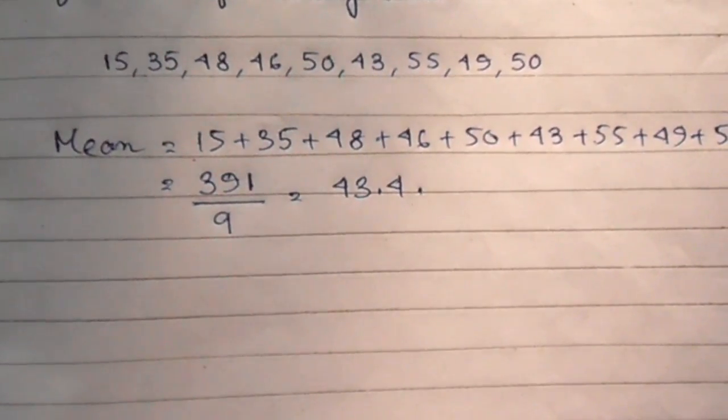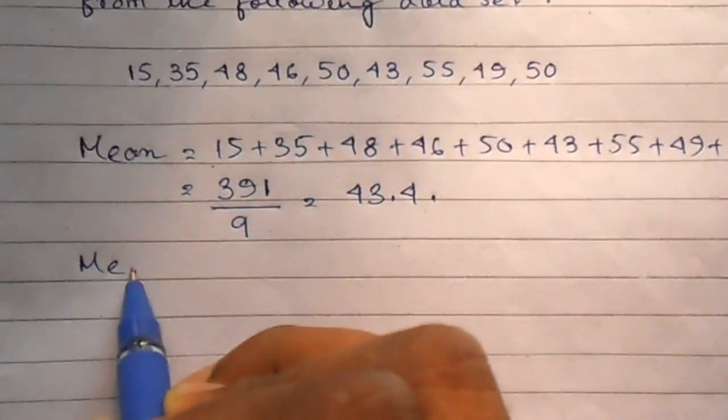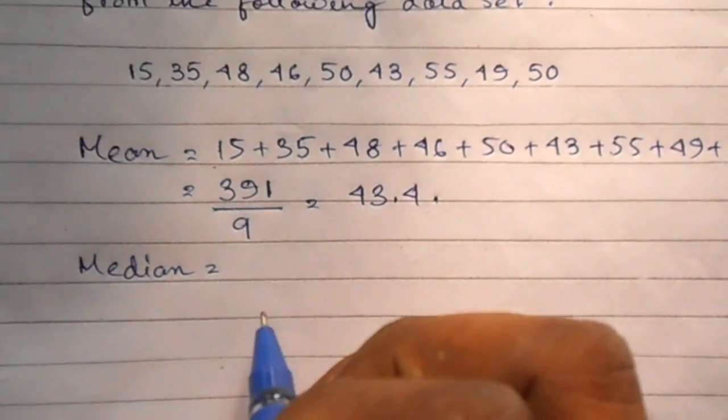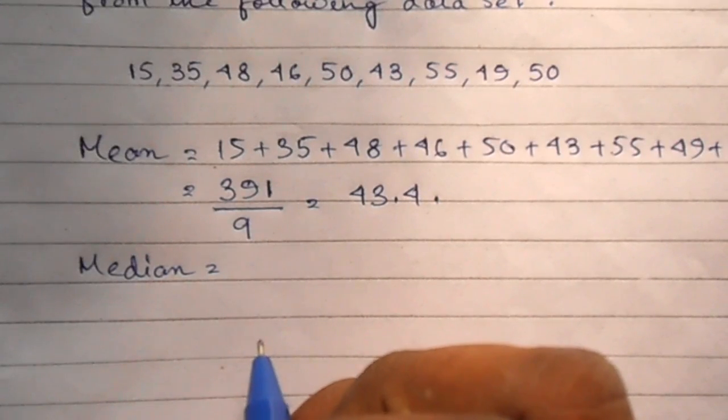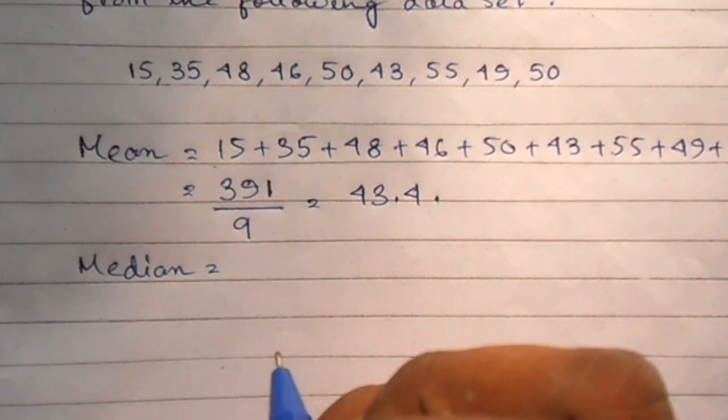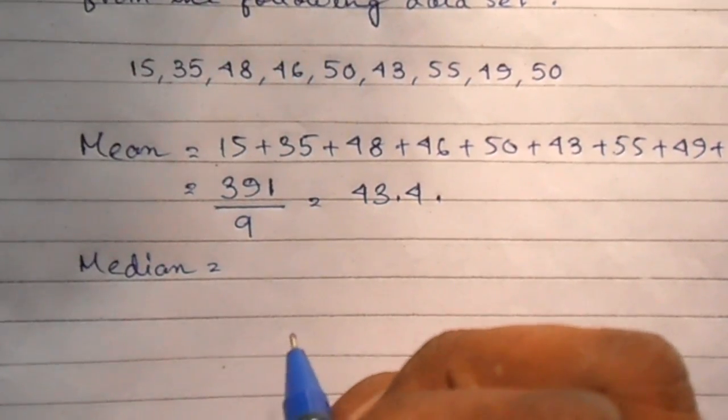Let's calculate median. Median is the middle number in the data set when the data set is written from lowest to greatest. So let's write from our data set.